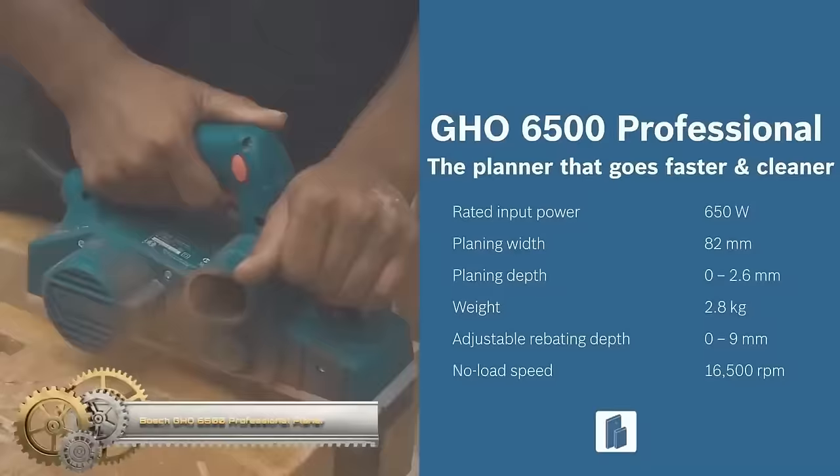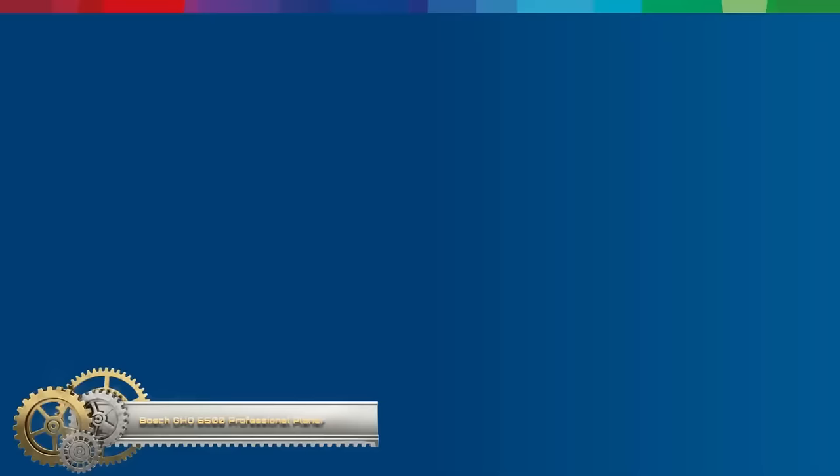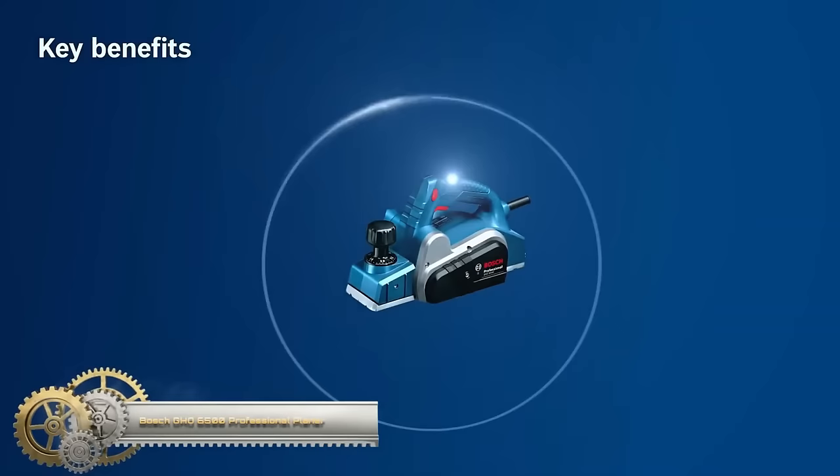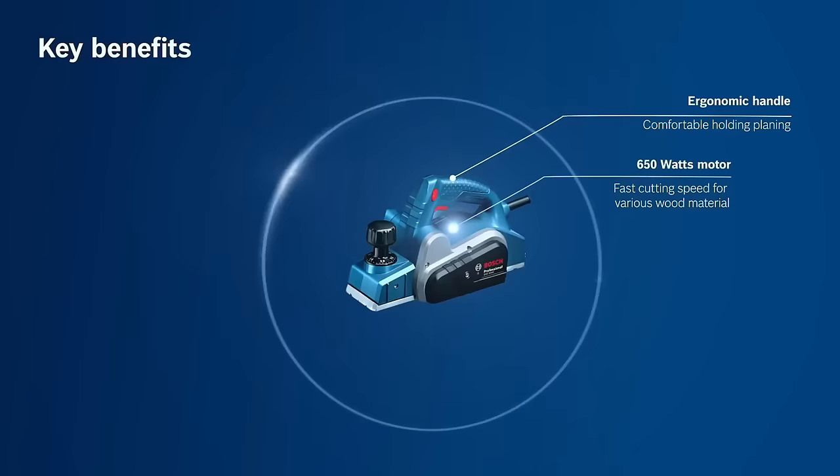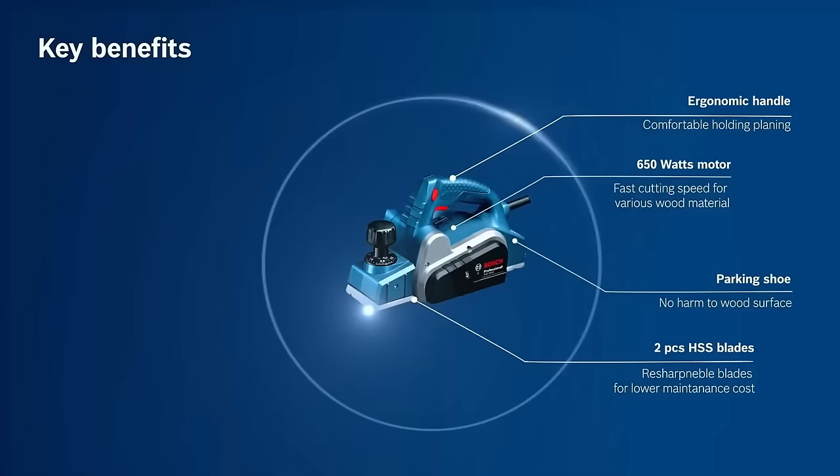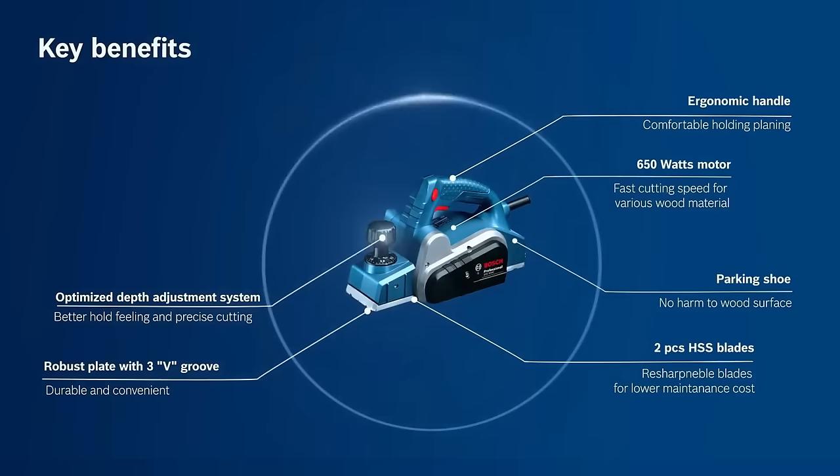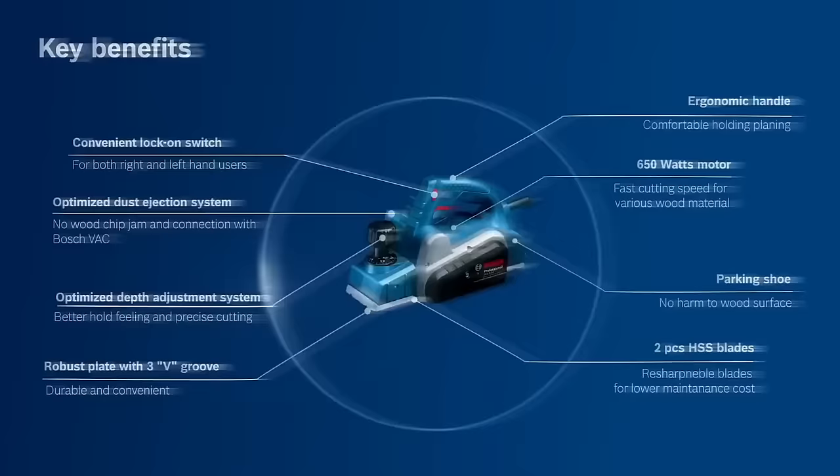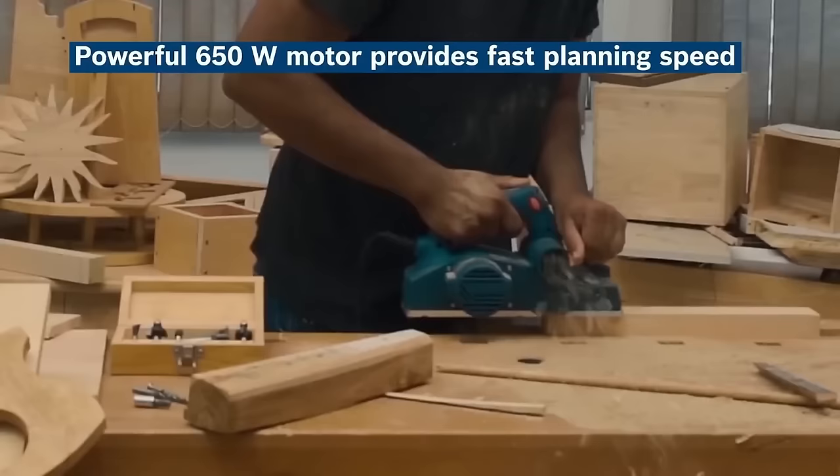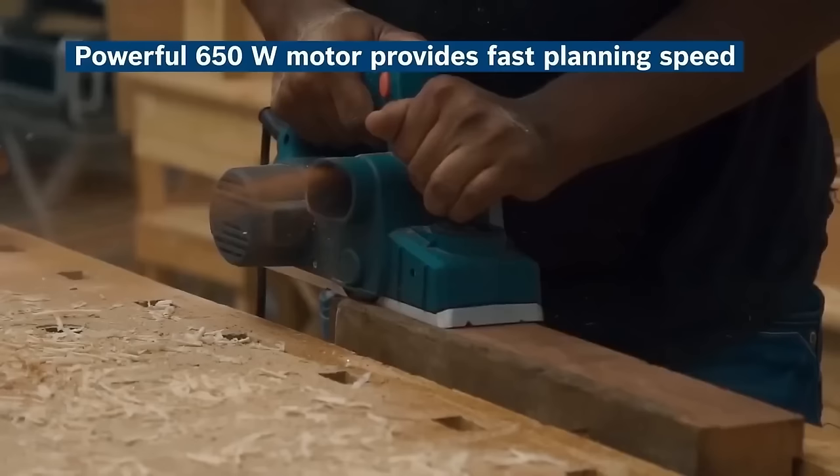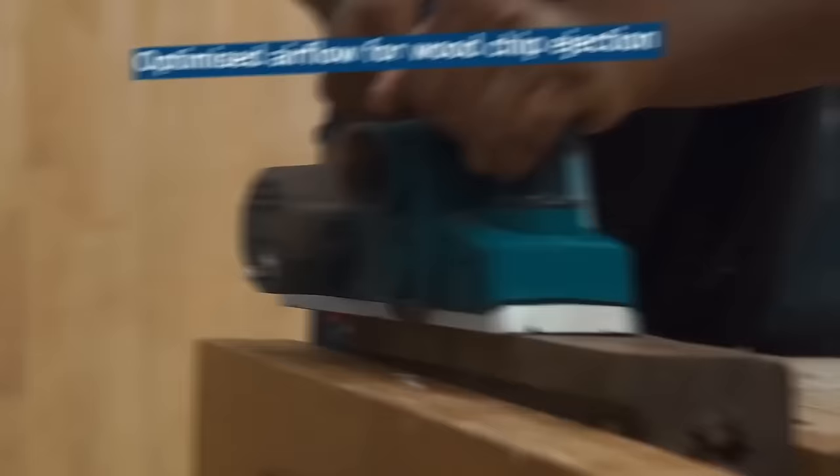The Bosch GHO 6500 Professional Planer is a versatile and powerful woodworking tool, equipped with a robust 650W motor suitable for various tasks. With a two-speed gearbox, it provides flexibility to adapt to different materials. The planer boasts an 82mm planing width and adjustable cutting depth of up to 2.6mm, offering precision in your work. Additionally, it features a dust collection port to maintain a clean workspace, and an ergonomic design for comfortable and efficient operation. Whether you're a professional woodworker or a DIY enthusiast, this planer is a reliable choice for your woodworking needs.